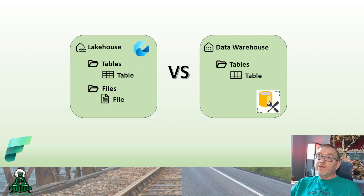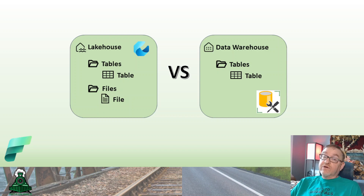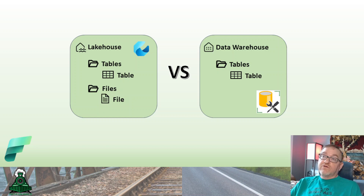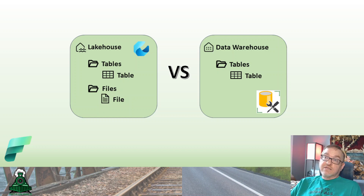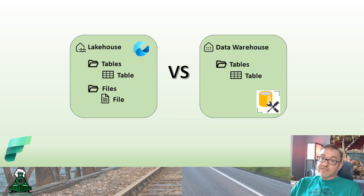Now let's talk about what's different. In the lake house, we have something called a SQL endpoint. While the lake house is built typically with notebooks, or Dataflow Gen 2 which will also generate data into the lake house, the resulting data is in a Delta table. A lot of manipulation happens in notebooks in most cases. It's considered an engineering exercise — understand some Python, be able to get through it all, and interact with the data that way.